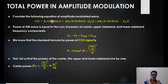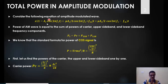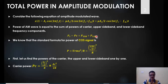We need to transmit all three components, so the total power required to transmit the AM signal is the power required to transmit the unmodulated carrier, plus PUSB — the power required to transmit the upper sideband — and PLSB, the power required to transmit the lower sideband. The sum of all three powers is the total power.